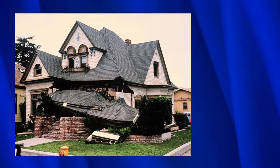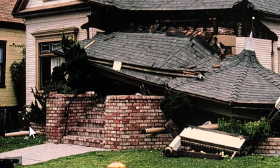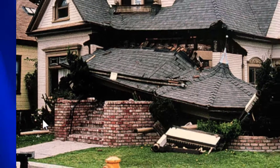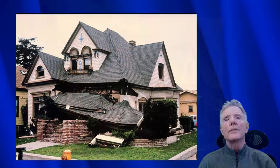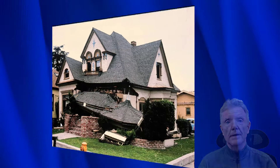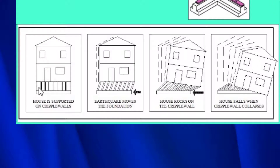Here's a good example of a cripple wall collapse. This is the floor of the house now, and it used to be that you would go up the stairs and into the floor because it was elevated a few feet — that was the cripple wall. Now the cripple wall has collapsed and the floor of the house is way down here on the ground. The whole purpose of a cripple wall retrofit is to prevent that from happening.